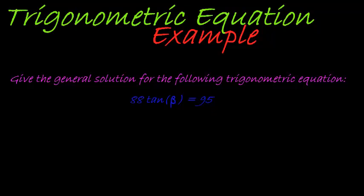So, in order to get to a trigonometric equation, or trigonometric ratio equal to a constant, all we simply need to do is get tan beta on its own. That's not very difficult. I simply divide with 88 on both sides, and then I have tan of beta equal to 95 over 88.